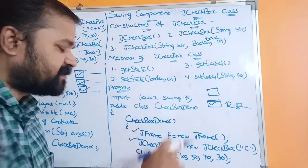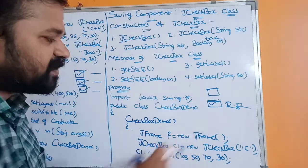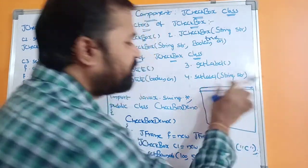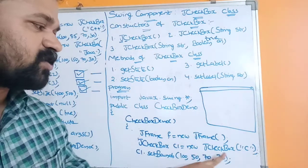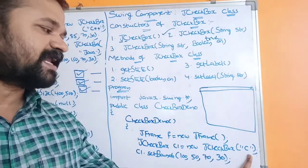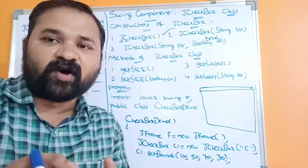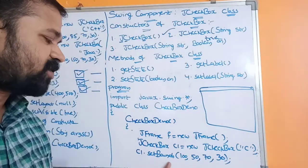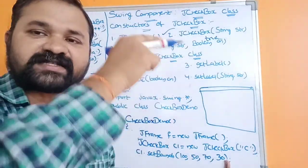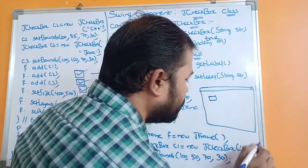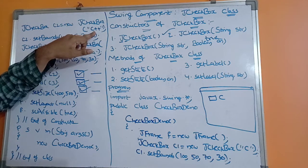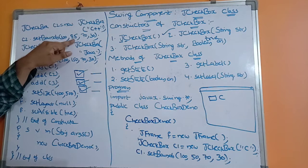We create a constructor with the same name as the class. Then JFrame f = new JFrame() creates a frame with no title. Next, JCheckbox c1 = new JCheckbox("C") creates the first checkbox with label 'C'. We set its bounds: c1.setBounds(100, 50, 70, 30) — where 100 is the x-coordinate, 50 is the y-coordinate, 70 is the width, and 30 is the height.